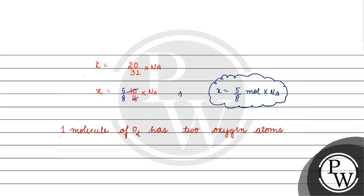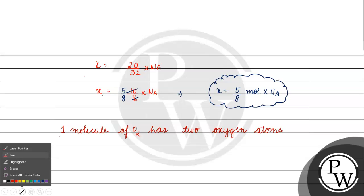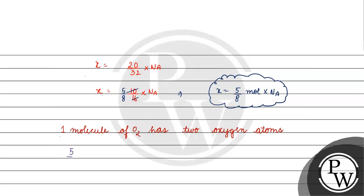So if we have 5 by 8 into Avogadro's number molecules of oxygen, how many atoms will there be? The number of oxygen atoms will be 2 into 5 by 8 into Avogadro's number.